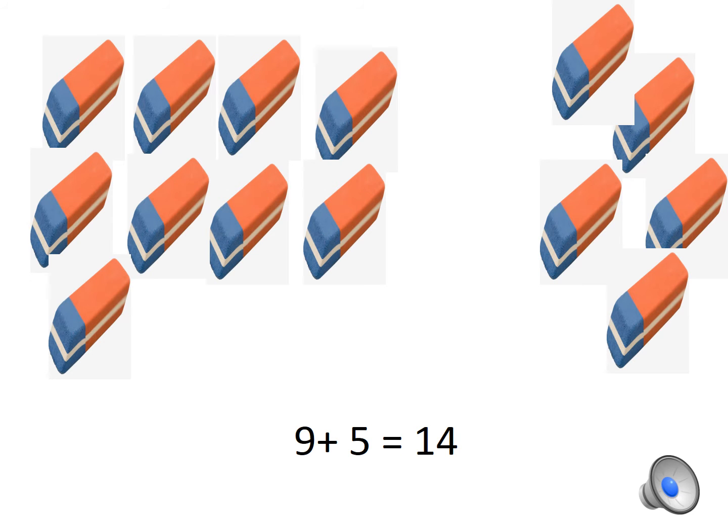The third one: we have 9 plus 5 equals 14. We have 14 erasers.